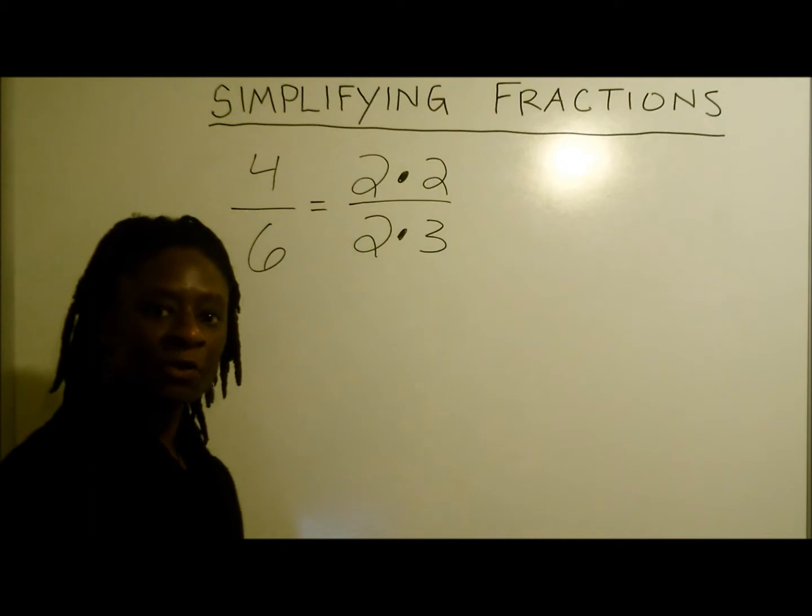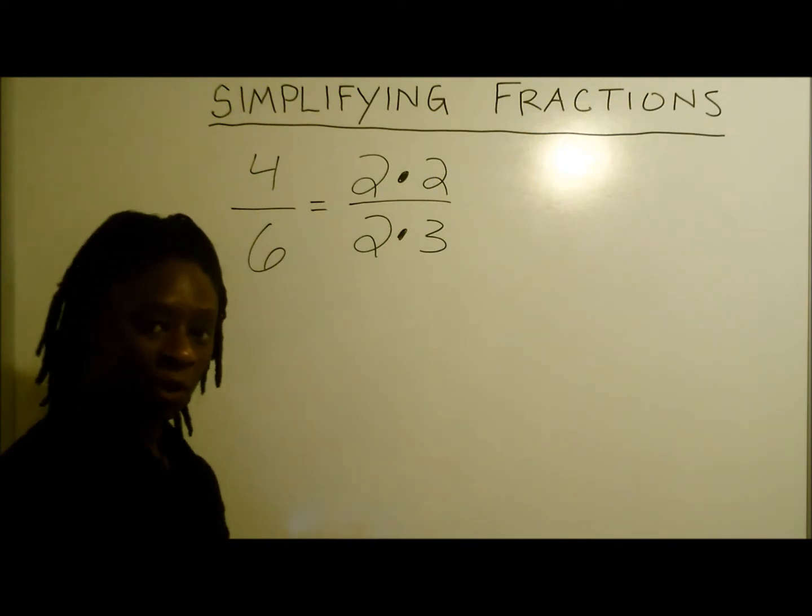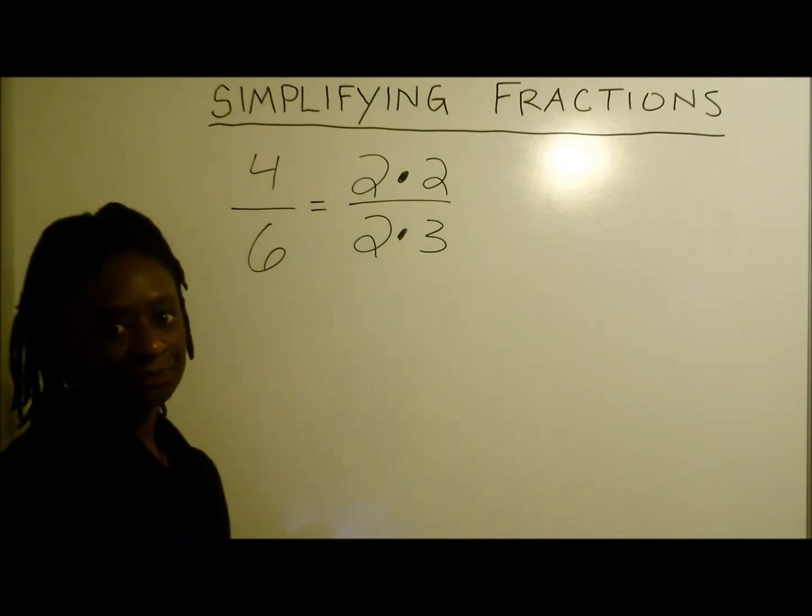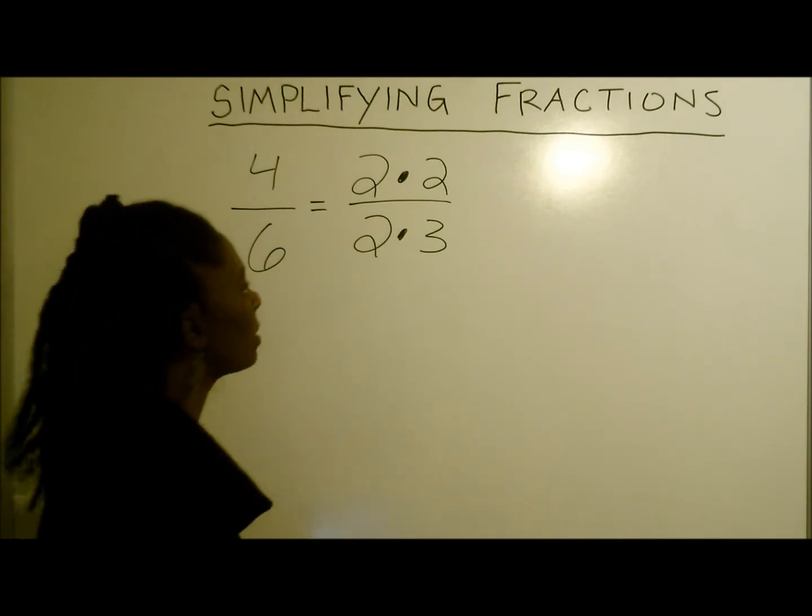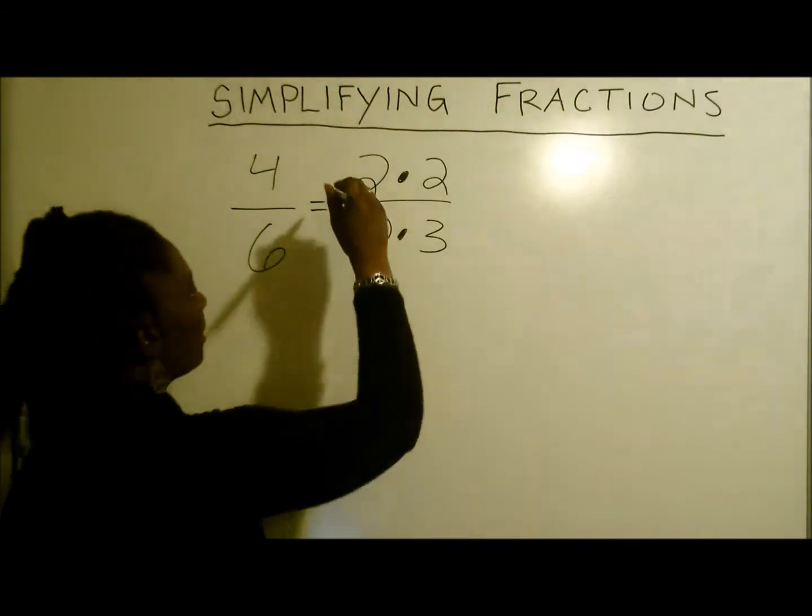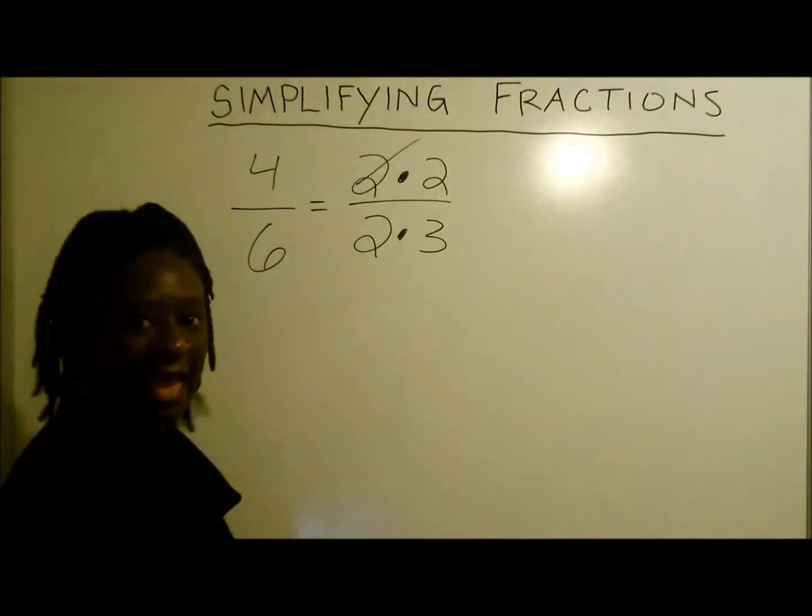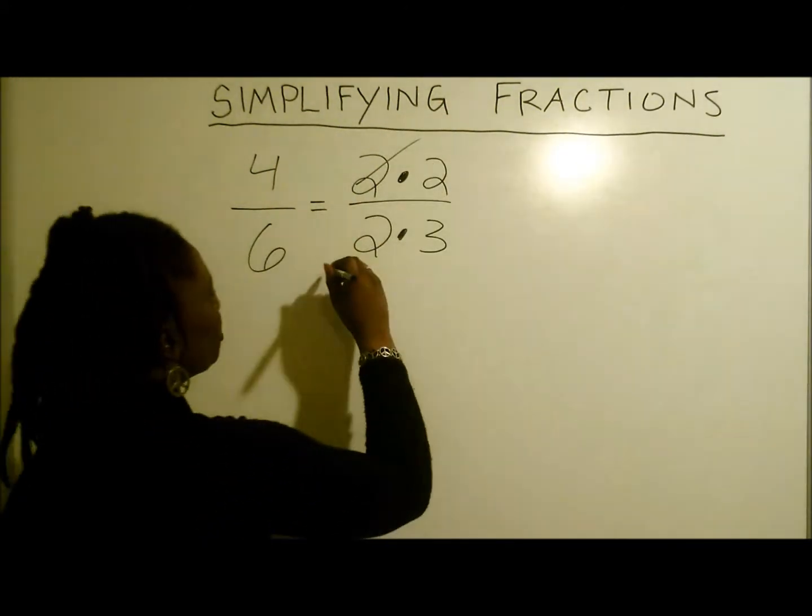Well now that we've broken these numbers down into a simpler form, what's our next step? What we have to do now is eliminate any like terms. So we can take this 2 here and get rid of it and say goodbye to this 2.